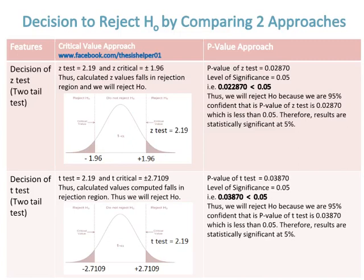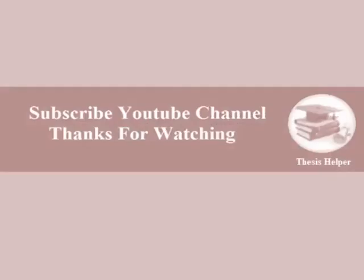For the t-test two-tailed test in the critical value approach: the t-test statistic equals 2.19 and t-critical is plus or minus 2.0639, so the computed value falls in the rejection region and we reject H-naught. In the p-value approach, the p-value of the t-test is 0.03870, which is less than 0.05, so we reject H-naught because we are 95% confident. Therefore, results are statistically significant at five percent. Kindly subscribe to the YouTube channel Thesis Helper. Thanks for watching.